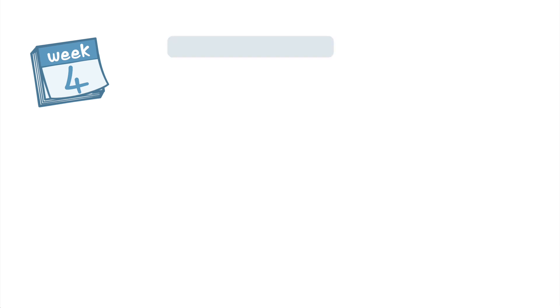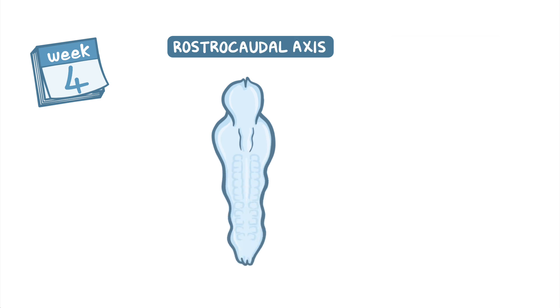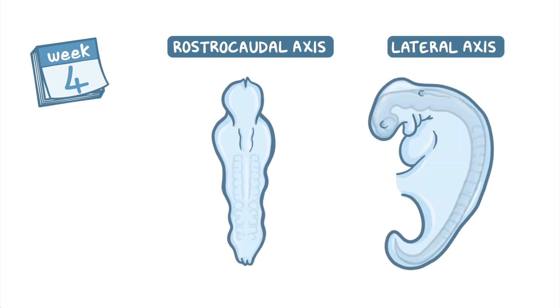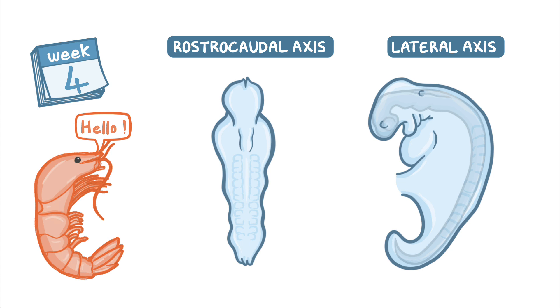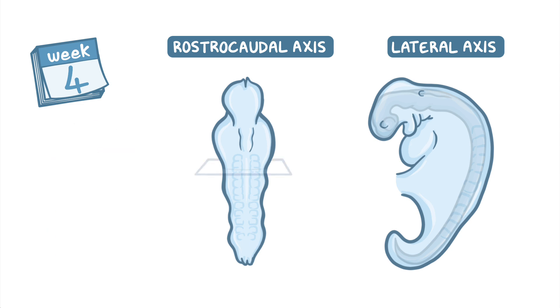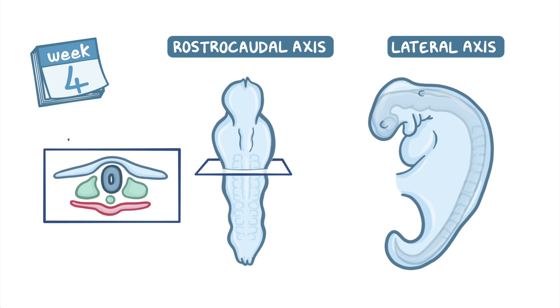Around week 4 of embryonic development, as a result of the folding of the embryo along the rostrocaudal axis and the lateral axis, the embryo takes on a more recognizably human form — but to be honest, it still looks more like a shrimp than a baby. At the head end of this little shrimp-like creature, the neural tube expands greatly, forming the primitive forebrain, which produces a bulge known as the frontal prominence.